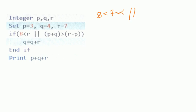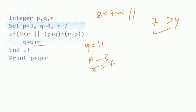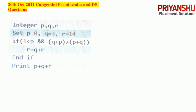Next question: p, q, r are given. a is less than r — r is 7, condition is false. OR condition: p plus q — q = 7 is greater than r minus p, condition is true. So q equals q plus r = 11. Now q = 11 plus p = 3, r = 7, total is 21. Answer is 21.